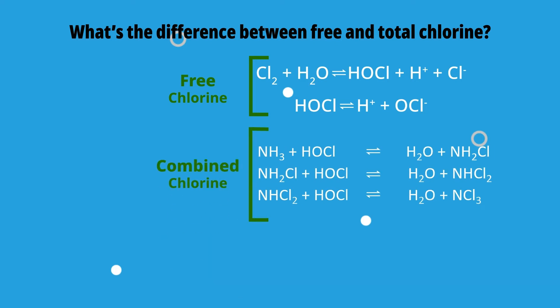Chloramines are also known as combined chlorine. Total chlorine is the sum of free chlorine and combined chlorine. The level of total chlorine will always be higher than or equal to the level of free chlorine.